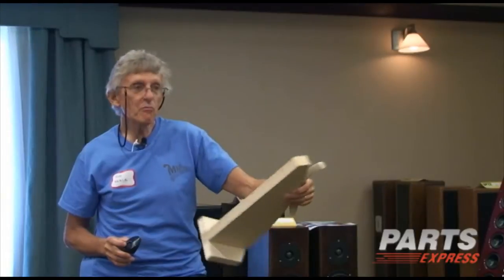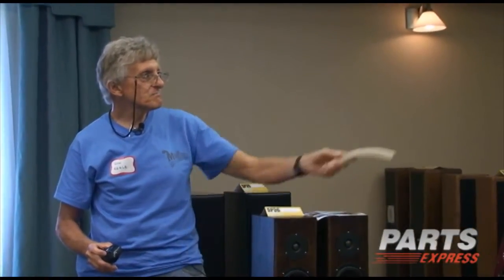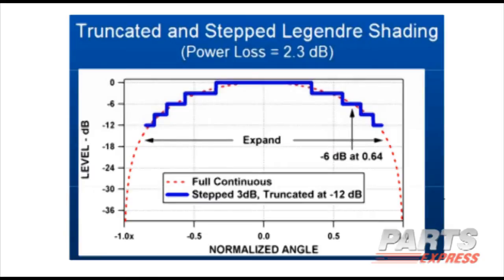This is an example of my first prototype, which is over here. And this shows the shading schematic, which is done passively inside the box. There are five different banks of speakers, and it goes in a 0, minus 3, 6, 9, and 12 — an approximation to this shading curve. This is done passively, and this shows the step approximation to it, with different banks of drivers.